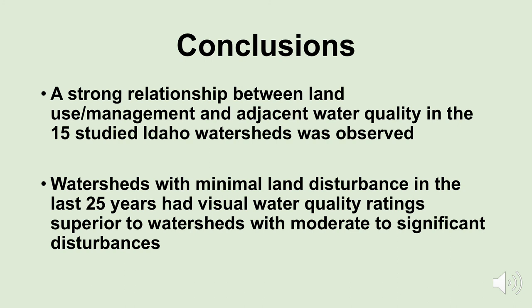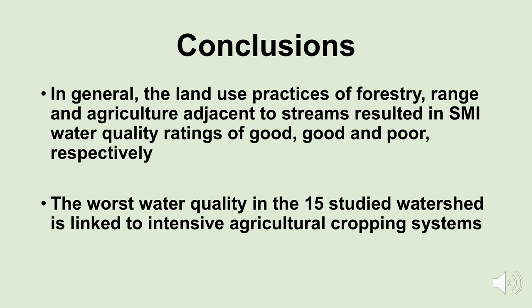A strong relationship between land use management and adjacent water quality in the 15 studied Idaho watersheds was observed. Watersheds with minimal land disturbance in the last 25 years had visual water quality ratings superior to the watersheds with moderate to significant disturbances. In general, the land use practices of forestry, range, and agriculture adjacent to streams resulted in SMI water quality ratings of good, good, and poor respectively. The worst water quality in the 15 studied watersheds was linked to intensive agricultural cropping systems.